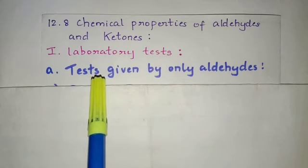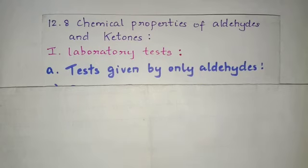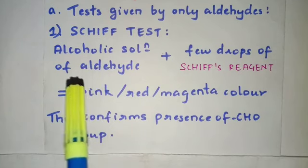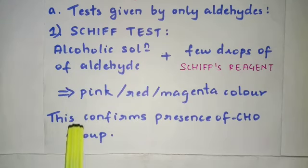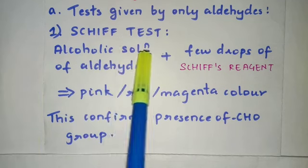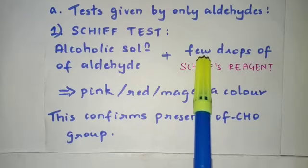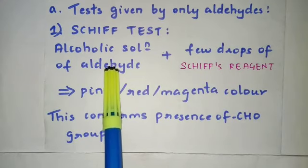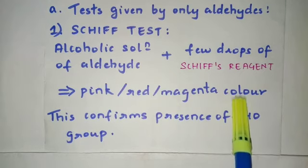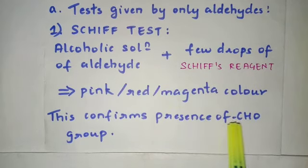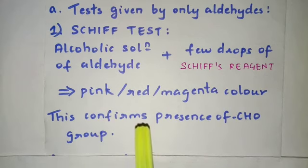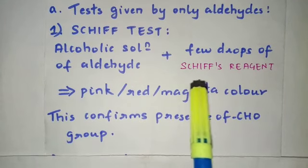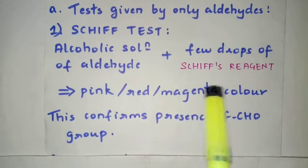Let's see the first category under laboratory tests: tests given only by aldehydes. The very first one is Schiff's test. For this test, there is no need to remember the chemical reaction or the structure of the reagent — you just have to remember the theory. We take an alcoholic solution of aldehyde and add a few drops of Schiff's reagent. A pink, red, or magenta color product is formed, which confirms the presence of the CHO (aldehyde) group.